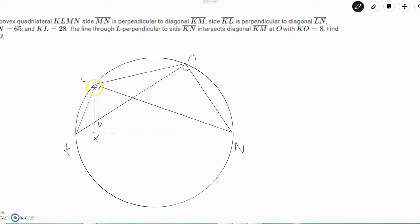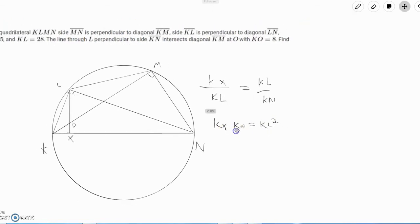What we find out is that since LXK, where I just let X be the perpendicular from LO to KN, is similar to KLN, we can use similar triangles to deduce some equations. This similarity implies that KX over KL, because we know the length of KL is 28 and KX is part of KN, is equal to KL over KN. Rearranging this equation gives that KX times KN is equal to KL squared.